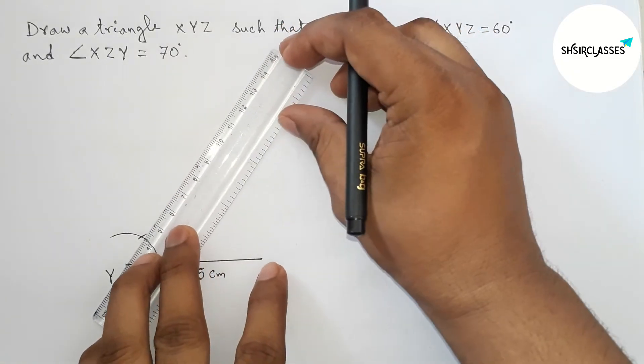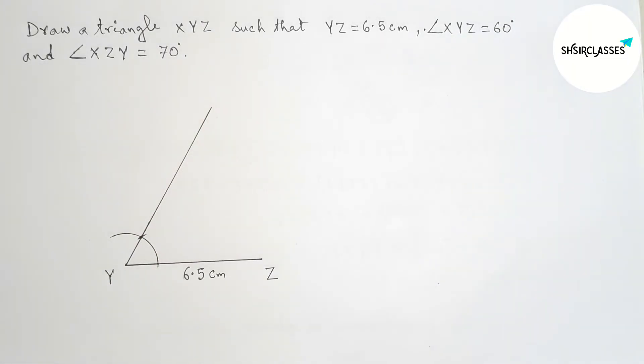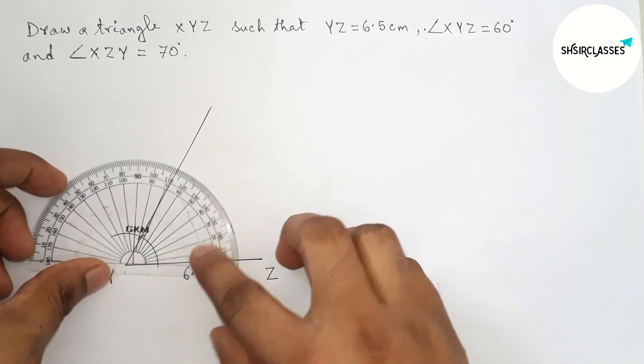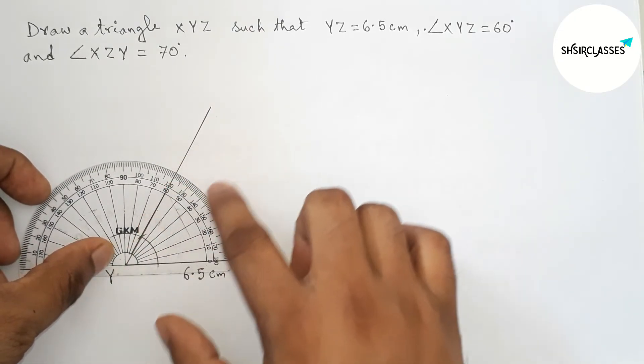Okay, so now joining this to get 60 degree angle. So this is obviously a 60 degree angle. Now I'm going to check whether it is 60 or not with the help of protractor.